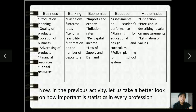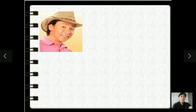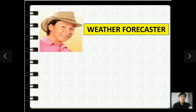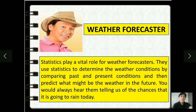In the previous activity, let us take a better look on how important statistics is in every profession. Number one, Kuya Kim, a weather forecaster. Statistics play a vital role for weather forecasters. They use statistics to determine the weather conditions by comparing past and present conditions and then predict what might be the weather in the future.